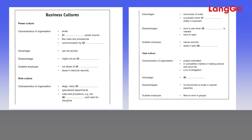Moving on to task cultures — this type is found in organizations that are project-oriented. You usually find it where the market for the company's product is extremely competitive, or where the products themselves have a short lifespan. Usually top management delegates the projects, the people, and other resources, and once these have been allocated, little day-to-day control is exercised from the top. One of the major benefits of this culture is that it's flexible, but it can't produce economies of scale or great depth of expertise.